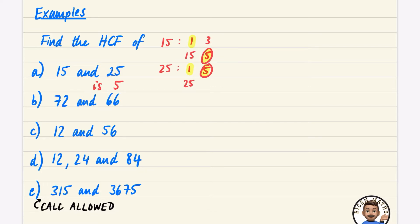You can also spot that they're both in the five times table and there's nothing bigger than that. Now let's have a go at part b, which is 72 and 66. I'm going to try the table method this time, setting up 72 and 66.